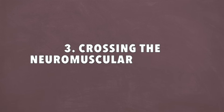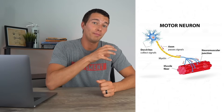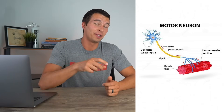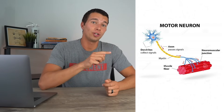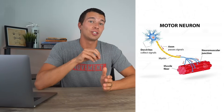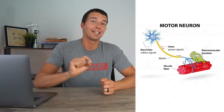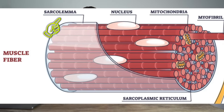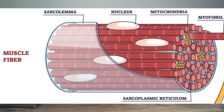Step number three is crossing the neuromuscular junction. Each nerve is connected to a group of muscle fibers. That action potential went down the nerve all the way from the brain to the muscle, and now that acetylcholine has to go across the neuromuscular junction and specifically activate the sarcolemma. The sarcolemma is a membrane surrounding the muscle structure that actually helps send the signal to the entire group of muscle fibers. Since we have one nerve but a whole bunch of muscle fibers and myofibrils, the sarcolemma helps spread the signal out to the entire muscle.